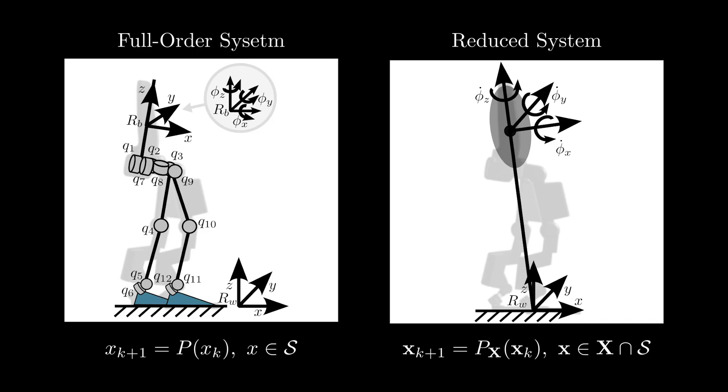Additionally, we project our full-order state dynamics to a reduced-order manifold to reduce the dimensionality of our system. Specifically, we choose to represent our system using the angular velocity of the floating base frame.